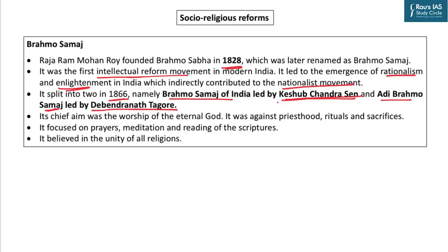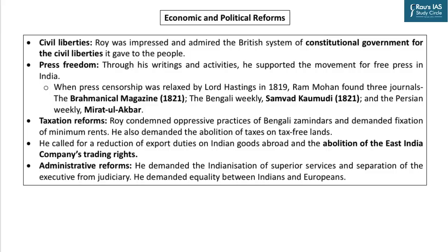But all factions of Brahmo Samaj, even today, believe in monotheism. The chief aim of Brahmo Samaj is to encourage the worship of one eternal God. The tradition of Brahmo Samaj is against any kind of ritual, miraculous stories, priesthood, and sacrifices. The focus is on prayers, direct communication with God, meditation, and correct interpretation of the scriptures. The idea is of one God and hence unity of all religions — but taking teachings from the scriptures of different religions led to the 1866 split.